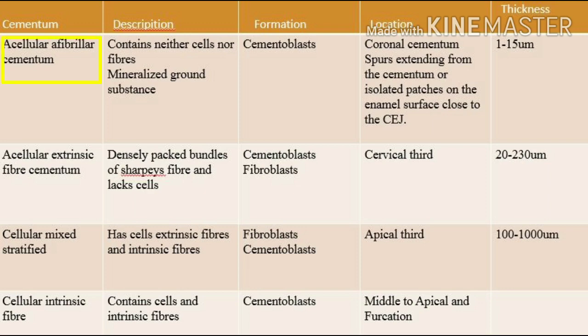Acellular afibrillar cementum contains neither cells nor fibers. It is present at coronal cementum spurs extending from the cementum or isolated patches on the enamel surface close to the edge. Acellular extrinsic fiber cementum has densely packed bundles of Sharpey's fibers and lacks cells. It is found in the cervical and middle third of roots, but sometimes may extend further apically. Its function is anchorage.